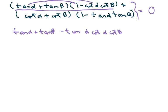And then you have minus, and I'm going to keep writing down here, tan of beta cotan of alpha cotan of beta. That's this part.